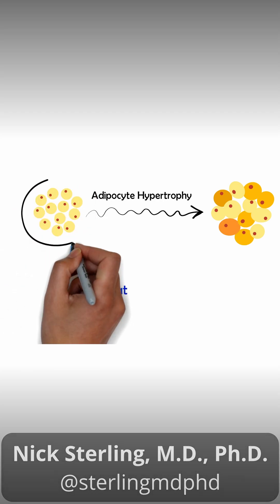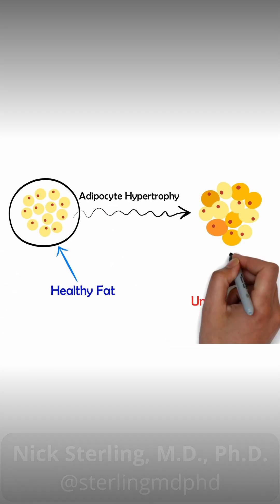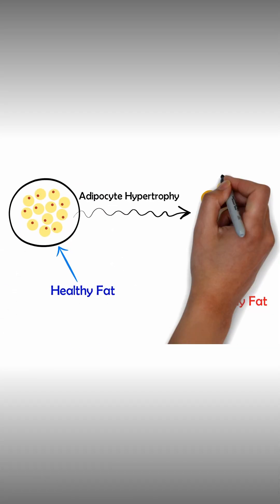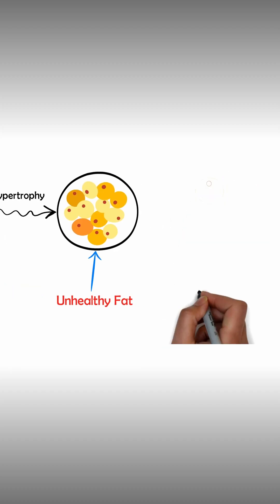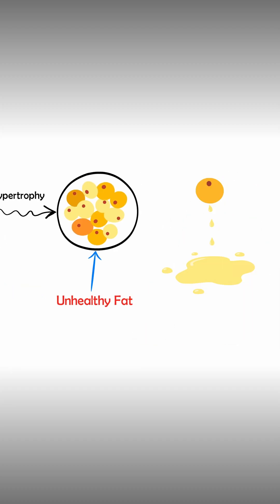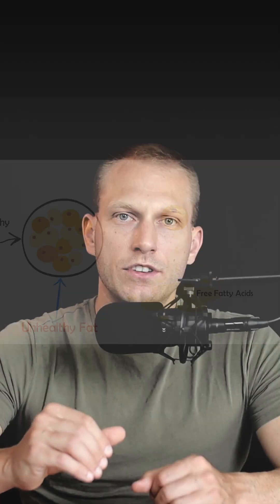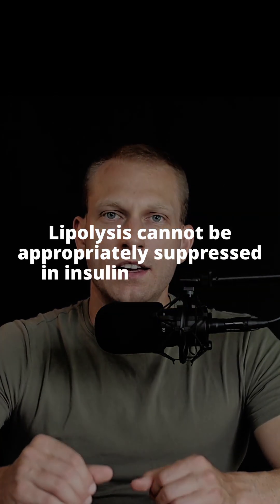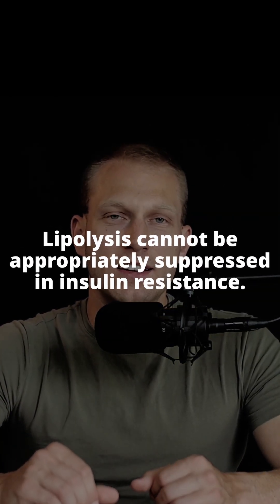So when insulin comes along to these large fat cells and says it's time to store energy as fat, the fat cell has to say no. In an insulin-resistant large fat cell, lipolysis can't be suppressed.